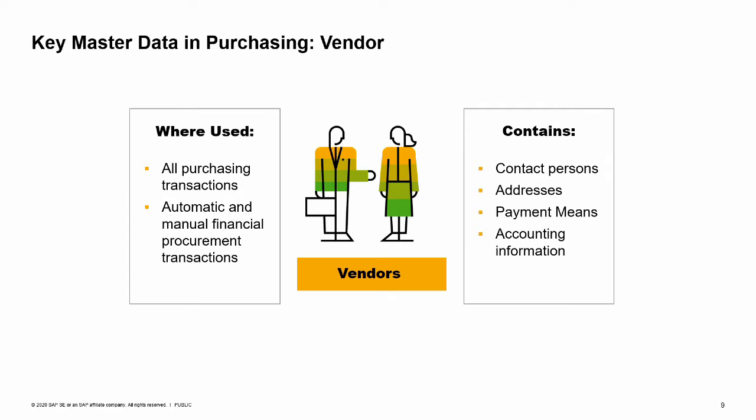Now let us look at key master data information needed for the purchase order. The first required piece of master data is the vendor. The vendor is one of the three types of business partner master data maintained in SAP Business One.